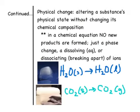A physical change is different — it's the altering of a substance's physical state without changing its chemical composition. When you look at a chemical equation, you're going to see no new products or new chemical formulas on the right side of the arrow. For example, melting ice: H₂O(s) → H₂O(l). We have the same thing on both sides; only the physical state changes. So that is a physical change.